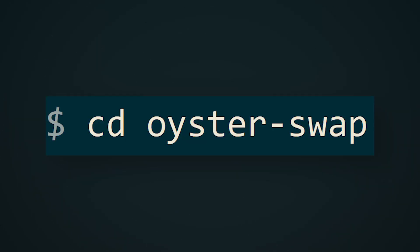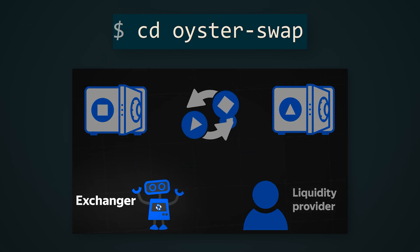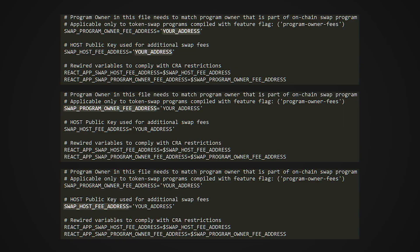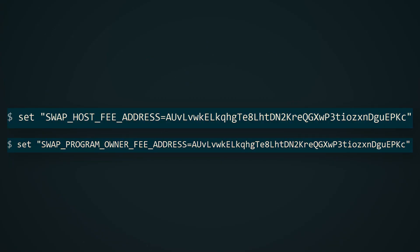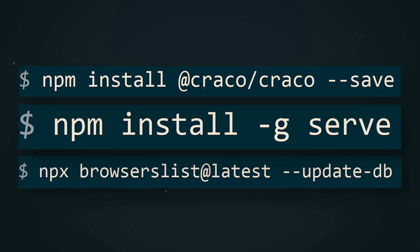Here we need to set variables to receive commissions for exchanges in our decentralized exchanger. You can do this by editing the .env file in any text editor located in the folder of the cloned repository. You will need to add your address in two lines to receive commissions. After that, enter two set commands in the terminal specifying your address again. After setting the variables, enter three commands to complete the installation of all third-party components.